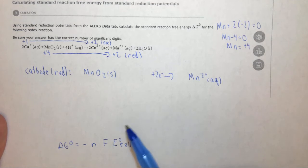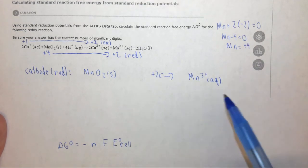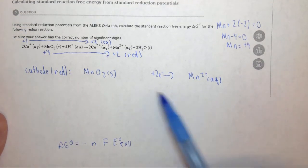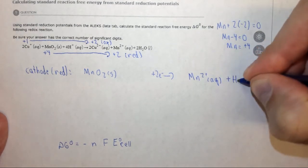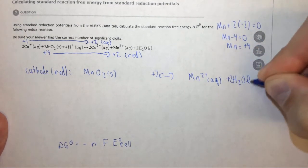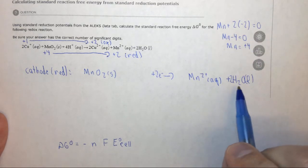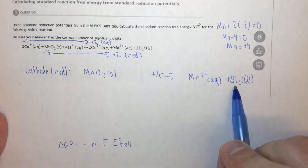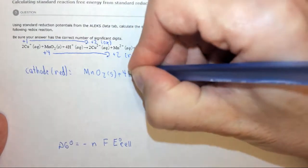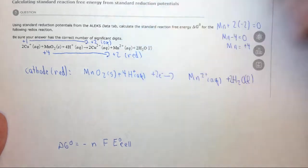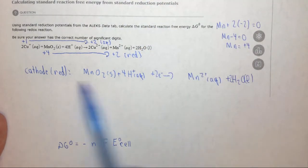Now we can balance out the waters, you could probably just look this up on the table, but we can balance it out. We have two oxygens here, no oxygens over here, so we need to add two waters. And if we add two waters we add four hydrogens, so therefore we need four H+ aqueous over here. And this gives us the reaction.